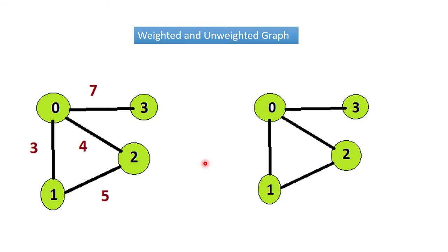Next is weighted and unweighted graph. A weighted graph means where edges will have some value. Suppose if you consider it as a road, from zero to three the distance may be seven kilometers — that is the weight of this edge. Or maybe we can define a relationship strength — how strong a bond is present between zero and three, maybe the index is seven. Whenever an edge has some value, that is known as the weight of the edge. Here from one to two the weight is five, zero to one is three, zero to two is four, and zero to three is seven. But in an unweighted graph, no weight is given to the edges.